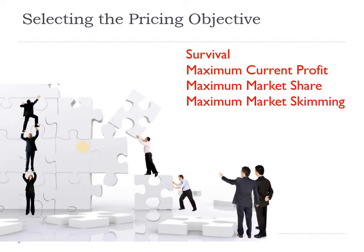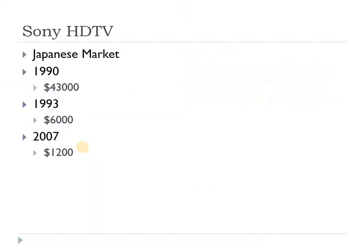Market skimming is exercised by people who launch new products. Sony has been exercising this strategy — keeping the prices of new products very high, then lowering them over time, and by then they have done the skimming. In any market there is money set aside for experimentation by early adopters, and if you can skim this money out of the market you are exercising market skimming. Sony's HDTV when first launched in 1990 was priced at $43,000, which was subsequently reduced to $1,200 by 2007. This is a typical example of market skimming.